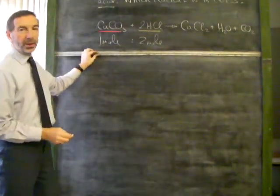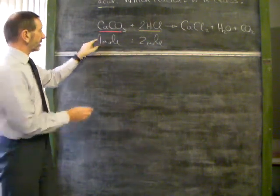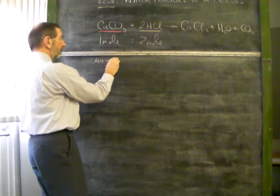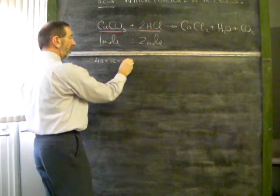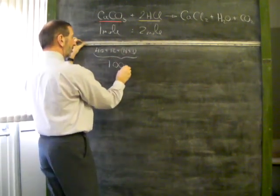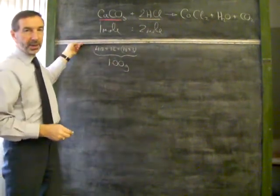If you look up the numbers in the data book to see what one mole of calcium carbonate weighs, you'll find calcium is 40, carbon is 12, oxygen is 16, and our three oxygens giving us a total of 100 grams. That would be 1 mole.